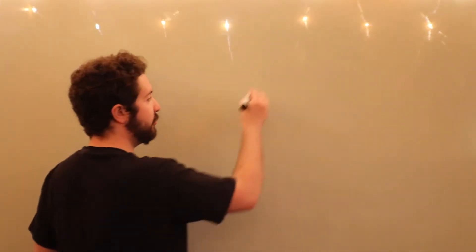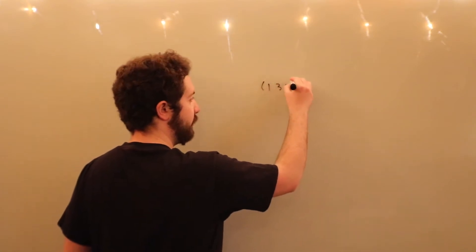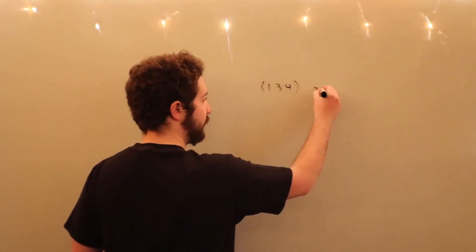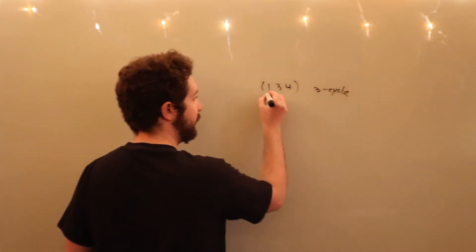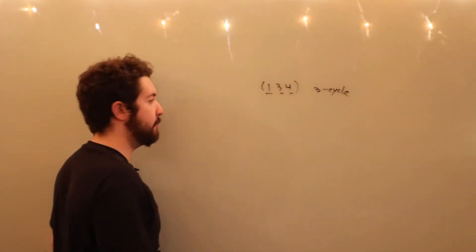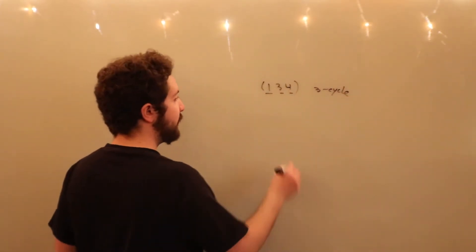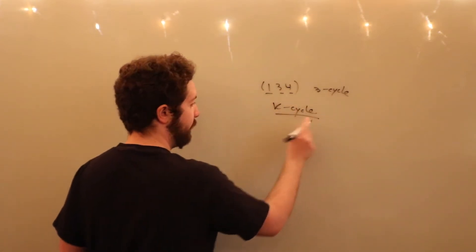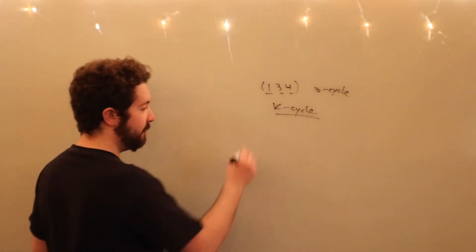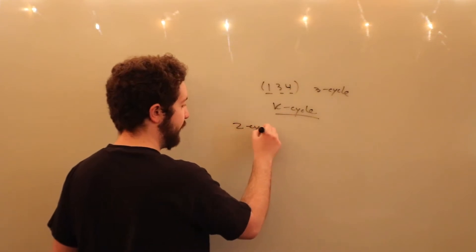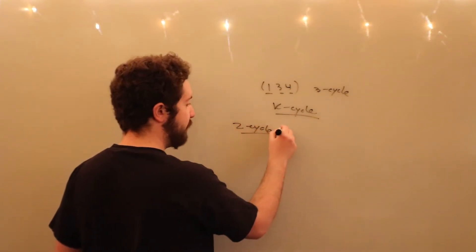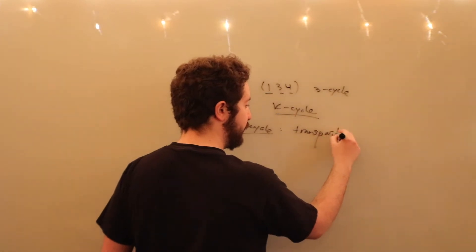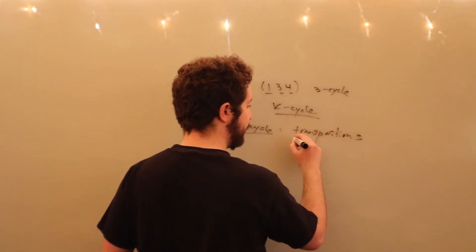The example I just showed was that of a 3-cycle, (1, 3, 4), because it has 3 elements. In general, we call these k-cycles, or cycles of length k. Two-cycles actually have a special name — we're going to call those transpositions. You transpose two elements.